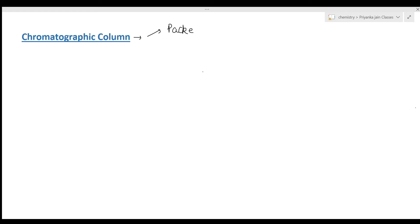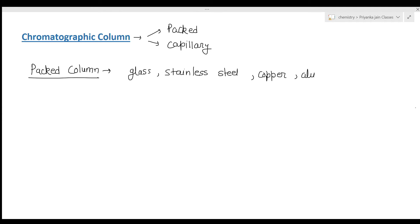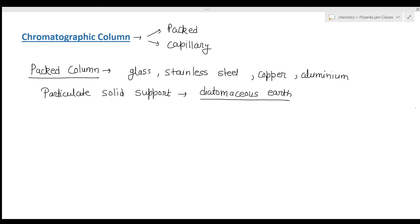Two types of chromatographic columns are used in gas chromatography: the packed column and the capillary column. A packed chromatographic column is constructed of glass, stainless steel, copper, or aluminium. The column is filled with fine particles of a particulate solid support — for example, diatomaceous earth, which has silanol (Si-OH) groups present on its surface.